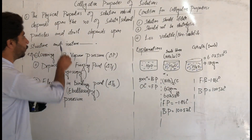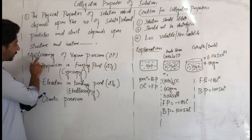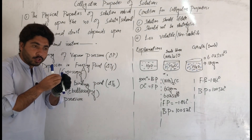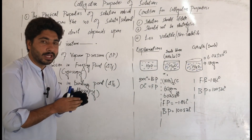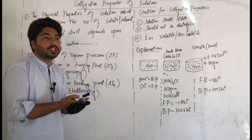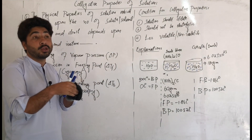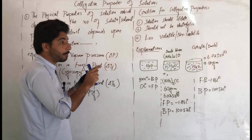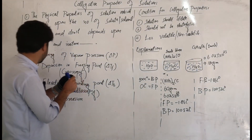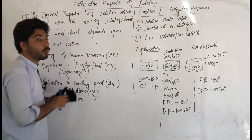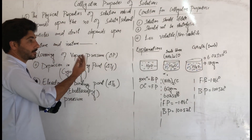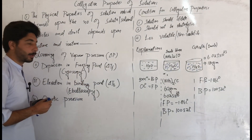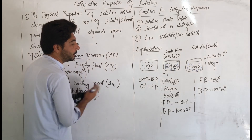Now let's explain the definition with examples. The first example is lowering of vapor pressure. When a solute is added to a solvent, the vapor pressure of the solution decreases compared to the pure solvent. This is called lowering of vapor pressure.